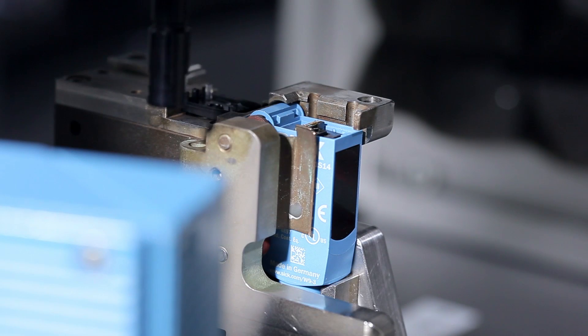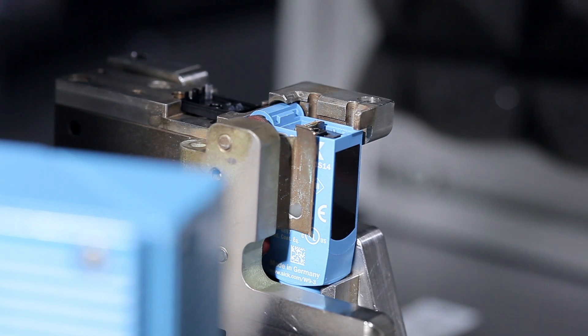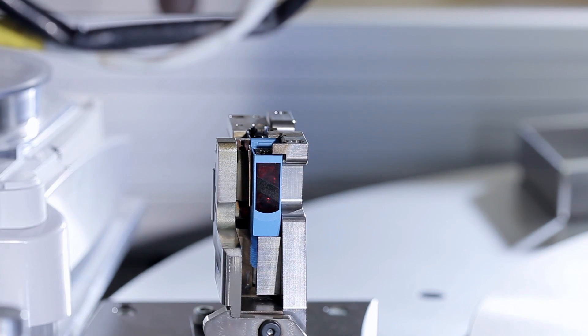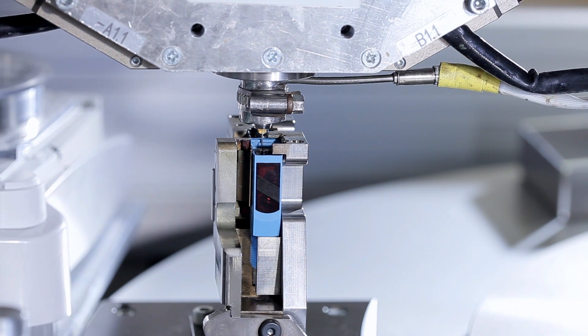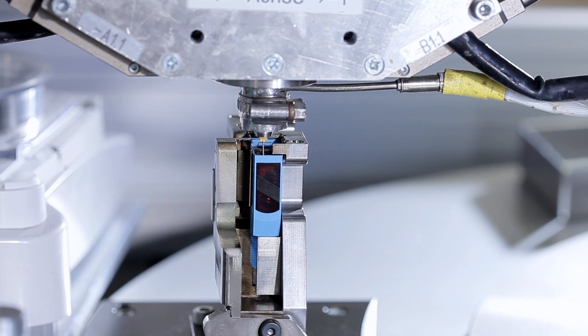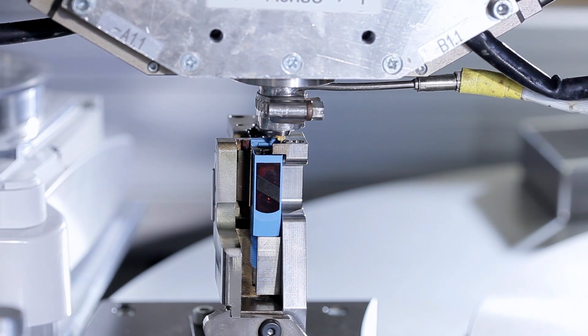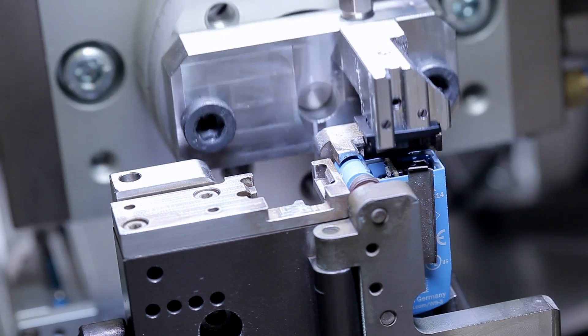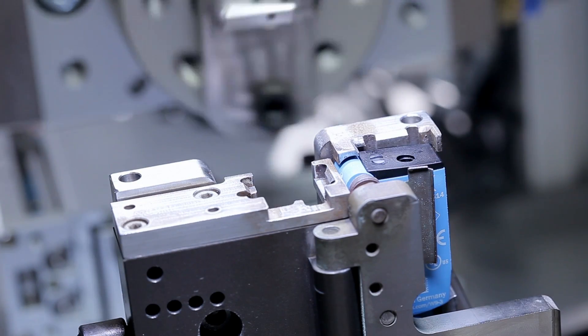In order to ensure the highest level of quality, particularly for the ingress protection of the housing, all sealing and gluing processes are fully automated. The final assembly of the W9L-3 demonstrates this automation using a gluing machine to bond the cover to the housing, thus ensuring that the unit is securely sealed.